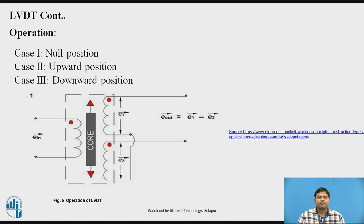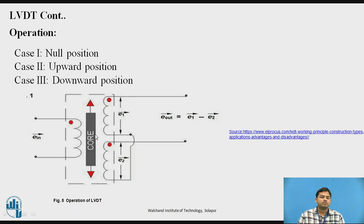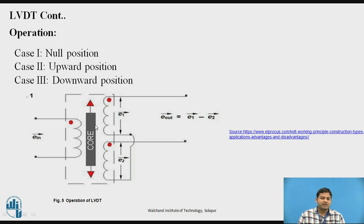Regarding the operation of the LVDT: there are three coils — one primary and two secondary. One end of each secondary coil is tied together and at the opposite end you get the output. The operation can be explained in three cases. When the core is at the center position, also called the null position, voltages E1 and E2 generated by electromagnetic induction in each coil are equal, so the difference voltage is zero — that's why it's called null position. When the core moves upward, more flux from the primary is linked to the upper secondary coil, so E1 is greater than E2, and you get a positive voltage.